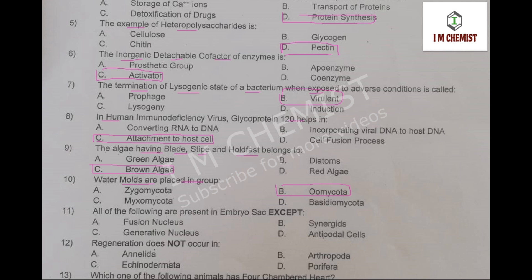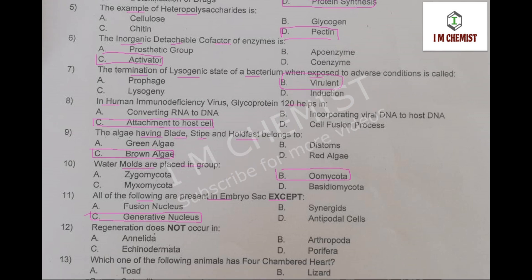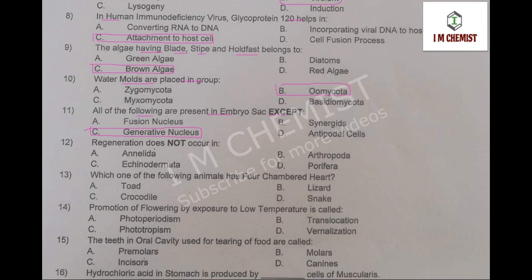MCQ number 11: all of the following are present in embryo sac except. The right option is option number C, that is generative nucleus. Generative nucleus is not present in embryo sac; the other options given in the MCQ are present in embryo sac.